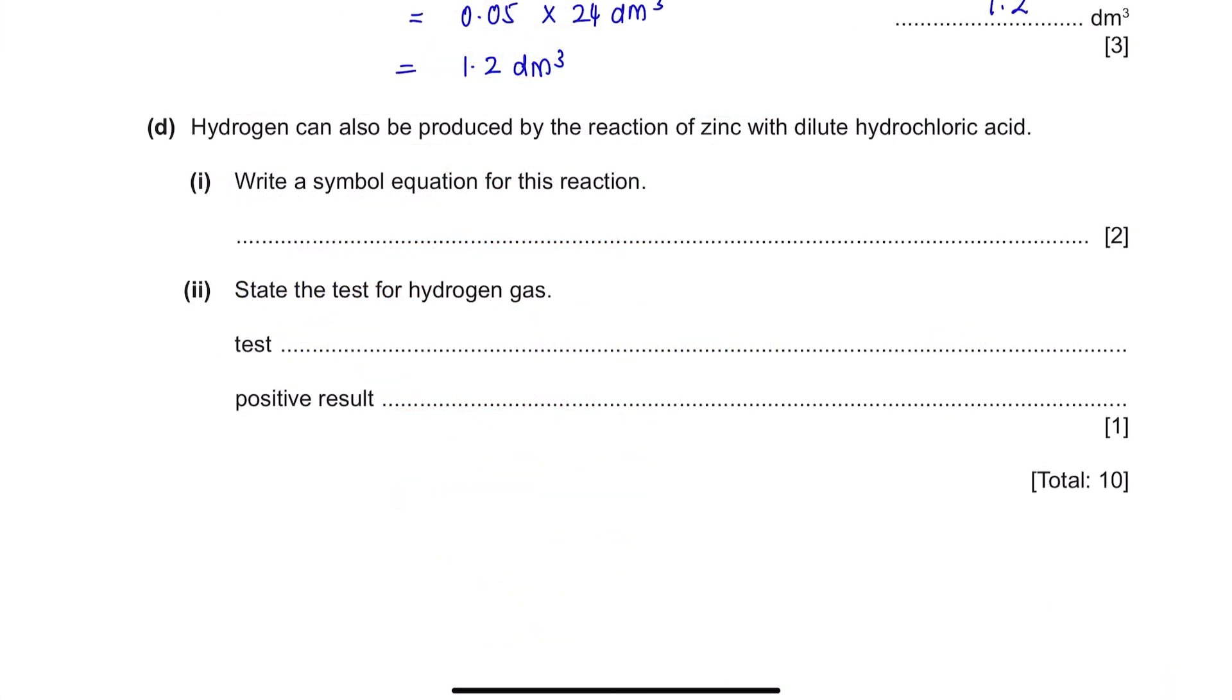Question D. Hydrogen can also be produced by the reaction of zinc with dilute hydrochloric acid. Part 1. Write a symbol equation for this reaction. This should be simple. You have got zinc reacting with dilute hydrochloric acid which is HCl, produces zinc chloride and hydrogen gas. This will give you one mark. Whenever you are writing an equation, always check to see whether or not your equation is balanced. You have your 2 chlorine, so we're going to place 2 here to balance out your chlorine, causing your hydrogen to become 2 and you have 2 hydrogen here as well. So, this equation is now balanced.